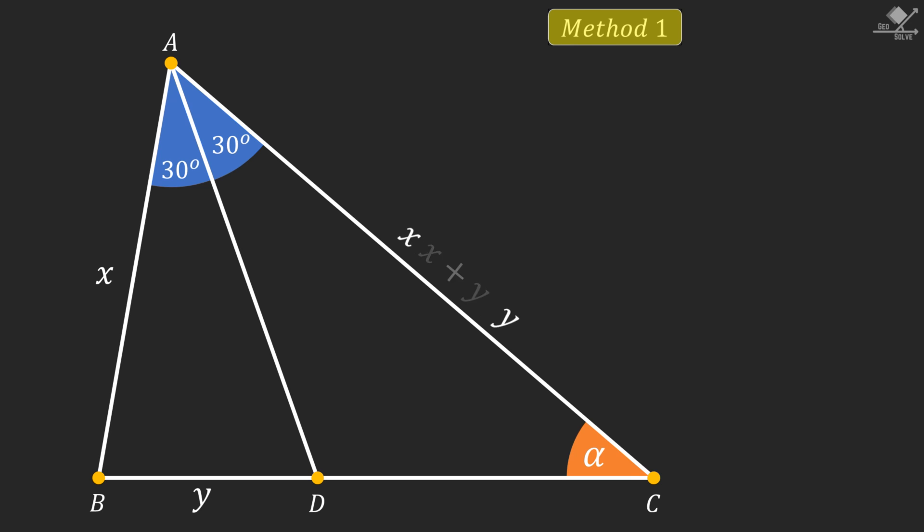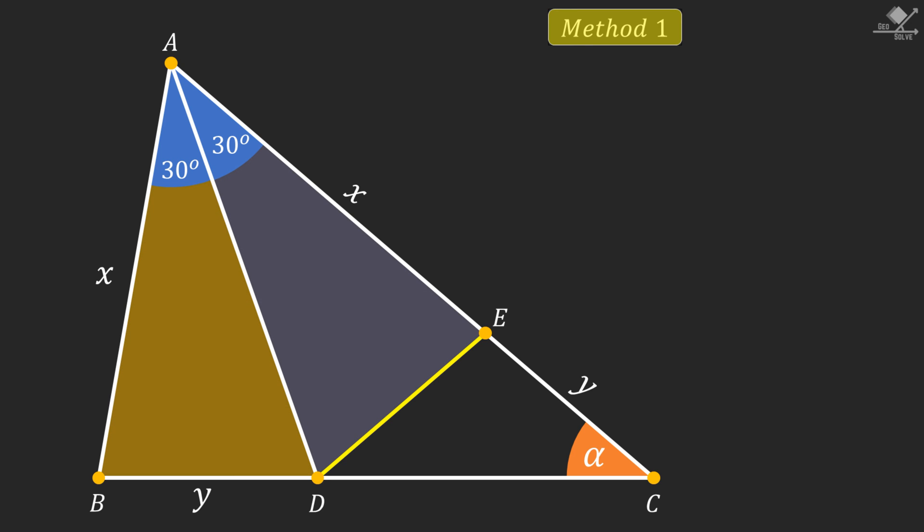On line segment AC, let's pick a point E, dividing the line segment into X and Y units. Then connect point D and point E, and focus on these shaded triangles.